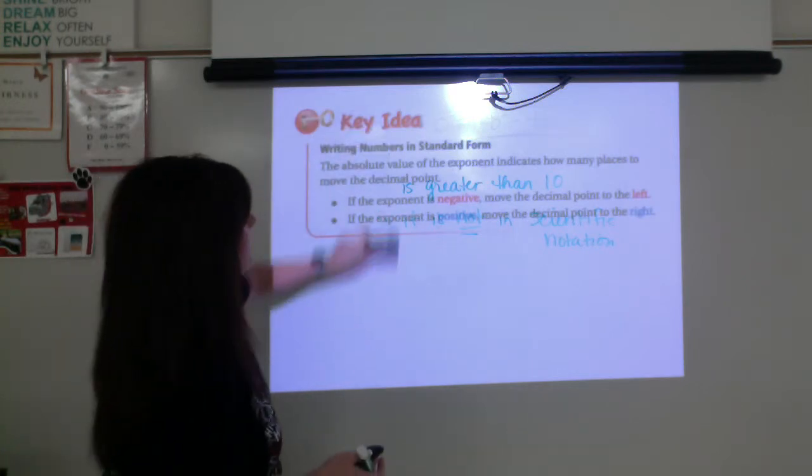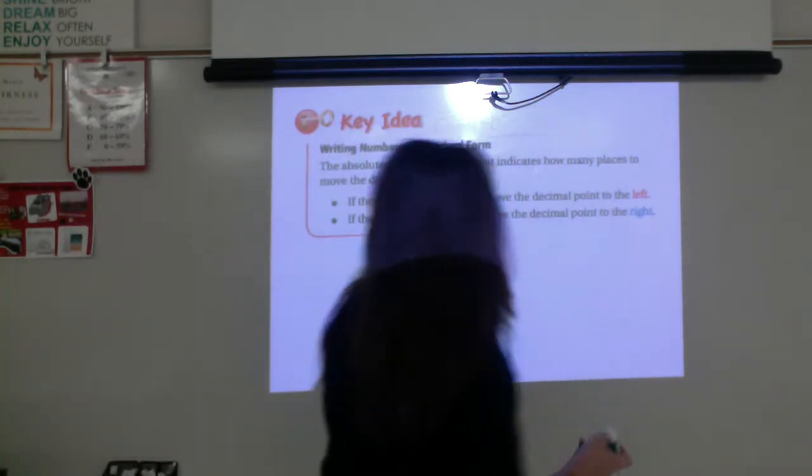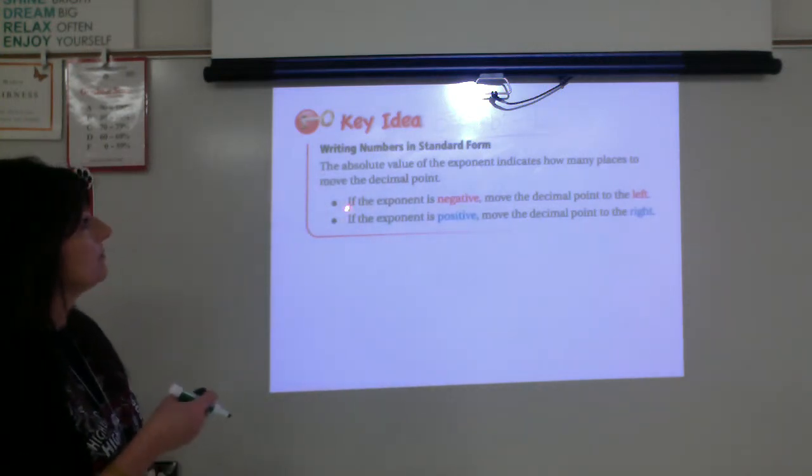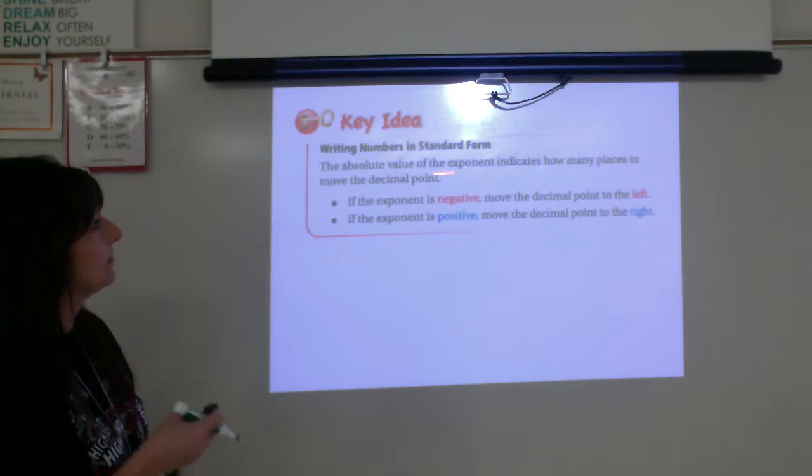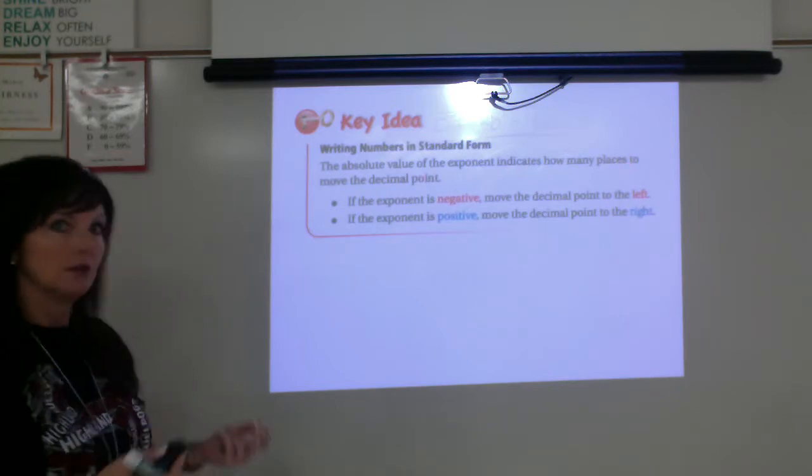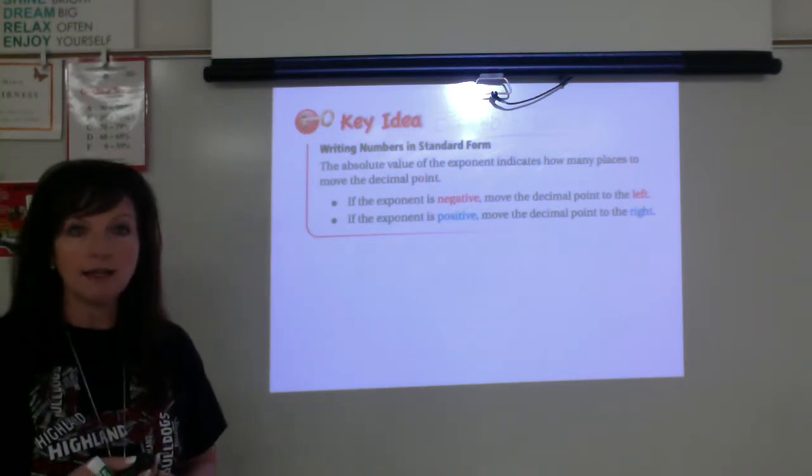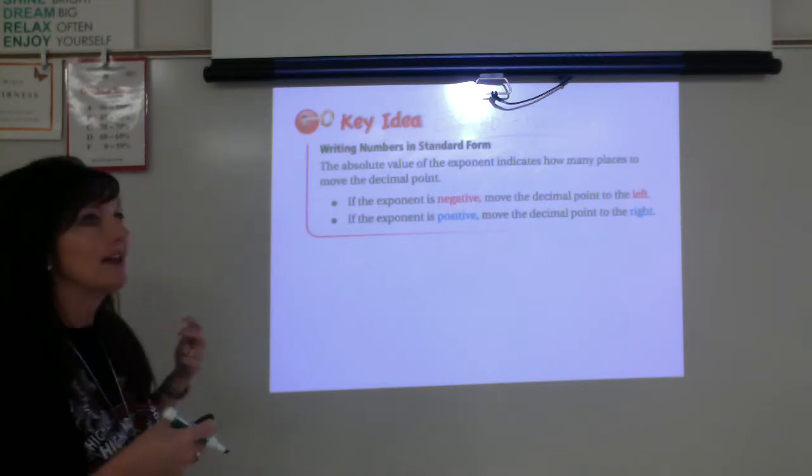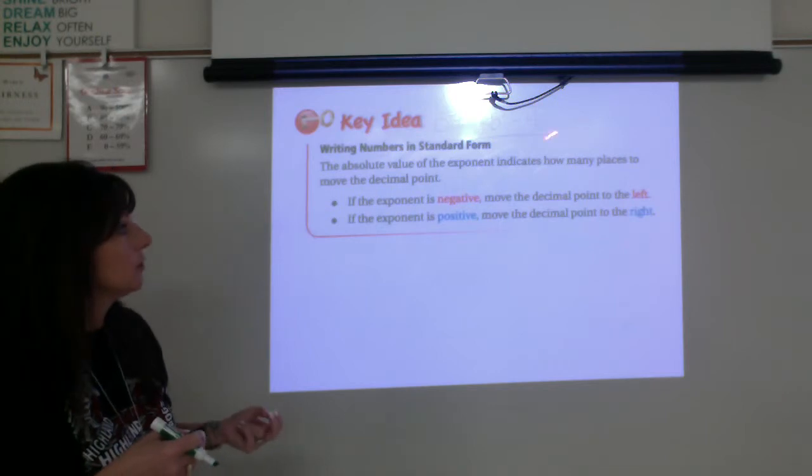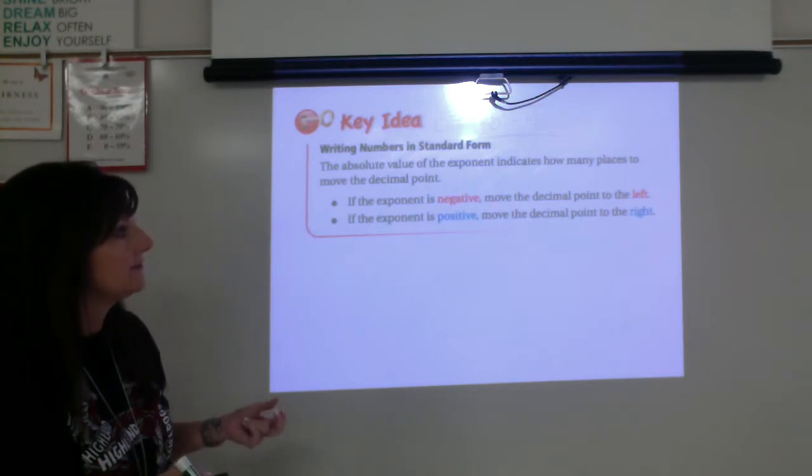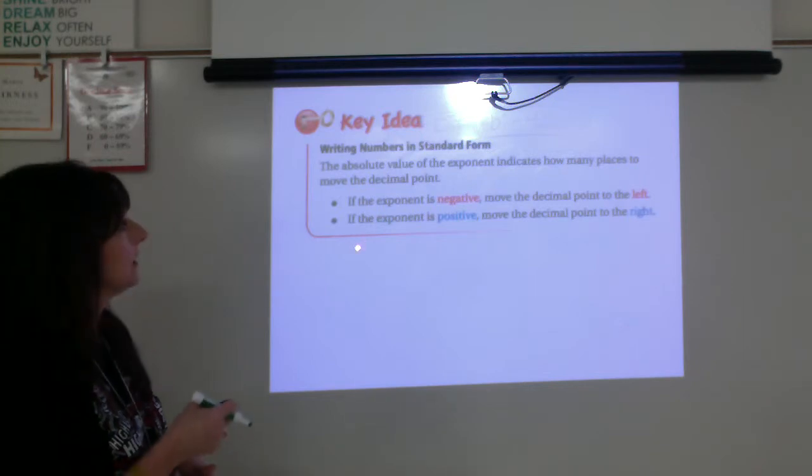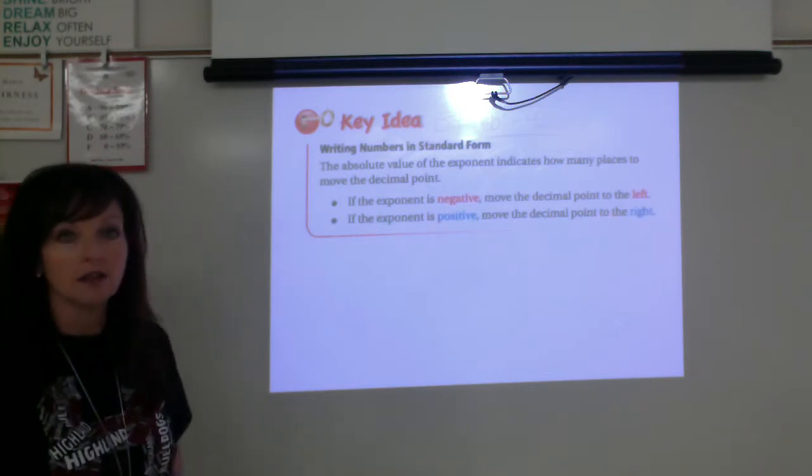Okay. So for us to write a number in standard form, writing in standard form is what is the value of that number using place value. The absolute value of the exponent indicates how many places to move the decimal point. If the exponent is negative, we have a very small number. So we want to move the decimal point to the left to fill in some zeros and write a small decimal number. If the exponent is positive, we move the decimal point to the right, and that will give us a large number.